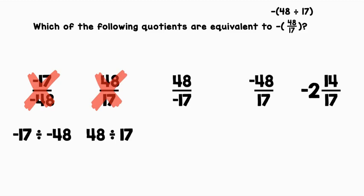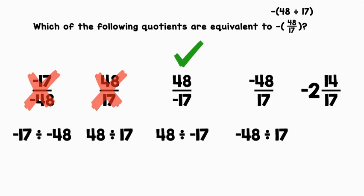48 over negative 17 can be rewritten as 48 divided by negative 17. It looks very similar to the expression in the question — a positive divided by a negative, so our answer is going to be negative, and we're dividing the same numbers. We can give this one a check. Negative 48 over 17 can be rewritten as negative 48 divided by 17. A negative divided by a positive is a negative, and we have the same numbers: 48 divided by 17. We can give this one a check.